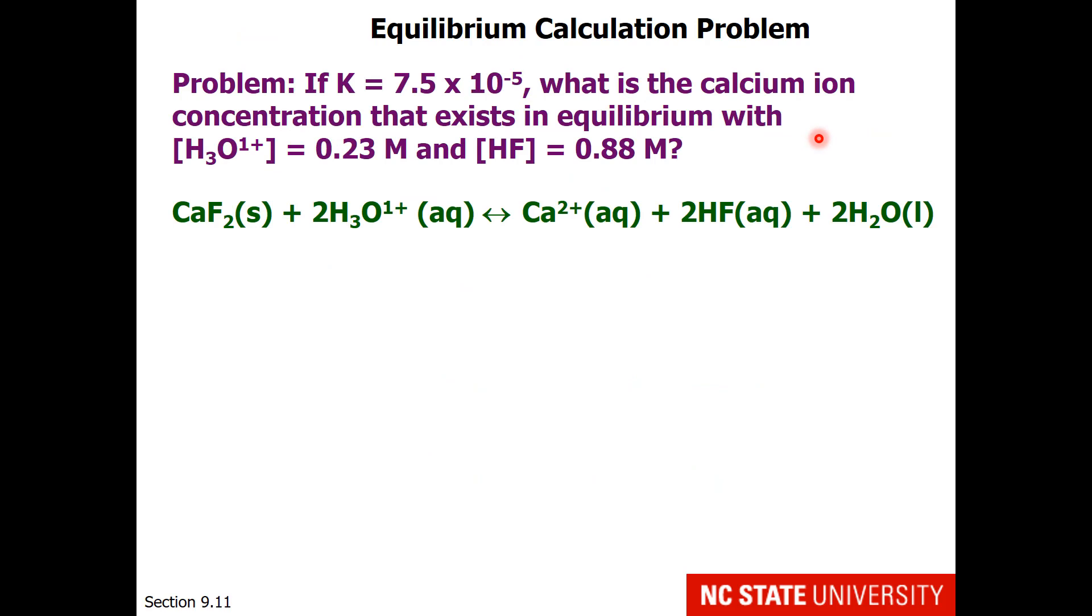Here is a sample of how you can do calculations using equilibrium reactions. If we are given the equilibrium value for this reaction as 7.5 times 10 to the minus 5th, what is the calcium ion concentration that exists in equilibrium with hydronium, which is 0.23 molar, and hydrofluoric acid, which is 0.88 molar?